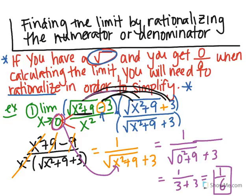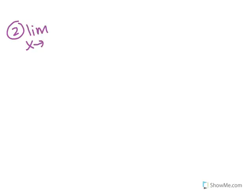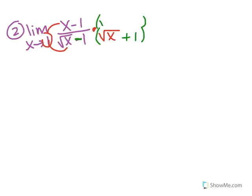If you need to review the foiling: first, outer, and inner terms ended up canceling, leaving the negative 9. That was rationalizing the numerator. Now here's an example of rationalizing the denominator: the limit as x approaches 1 of x minus 1 over the square root of x minus 1. Plugging in 1 gives 0 over 0, so we use the algebraic method. Since it's the denominator with a root, multiply by the square root of x plus 1 on top and bottom.